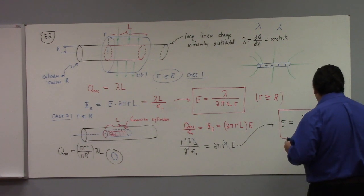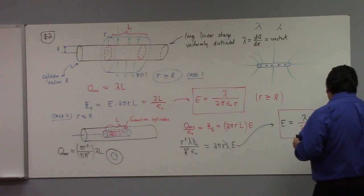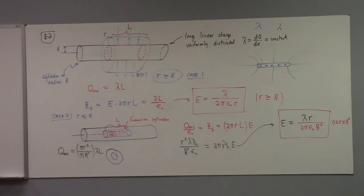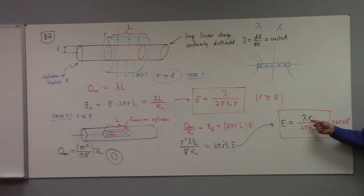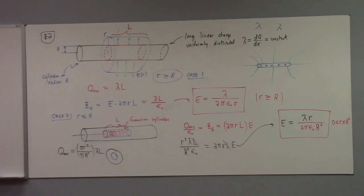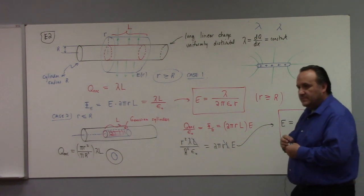That's the electric field for 0 less than or equal to r less than or equal to big R. Notice these formulas agree when little r equals big R — because if you put little r equal to big R, you get just 1 over big R. So these match at the surface. This is very similar to the solid charge sphere we did last time, where the electric field increased linearly inside a uniformly charged sphere.